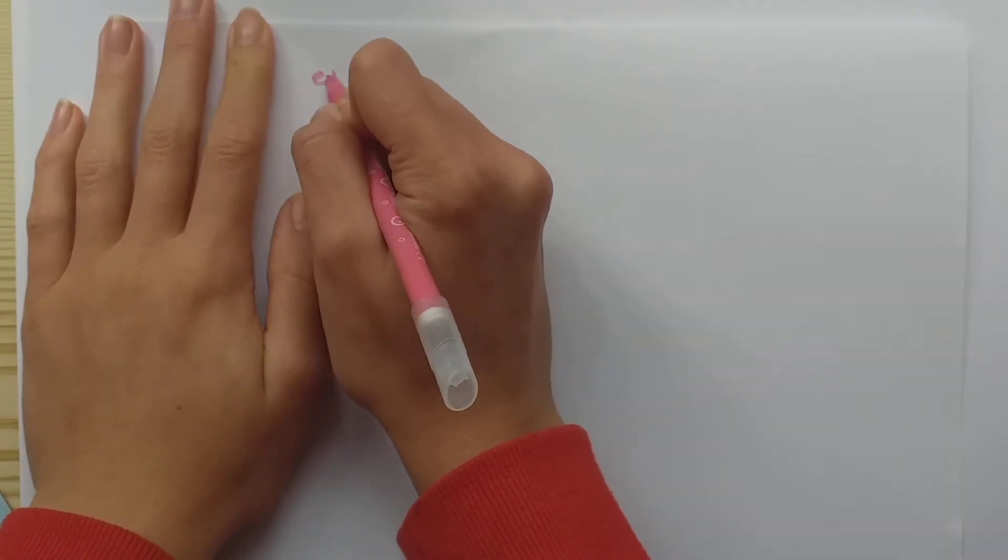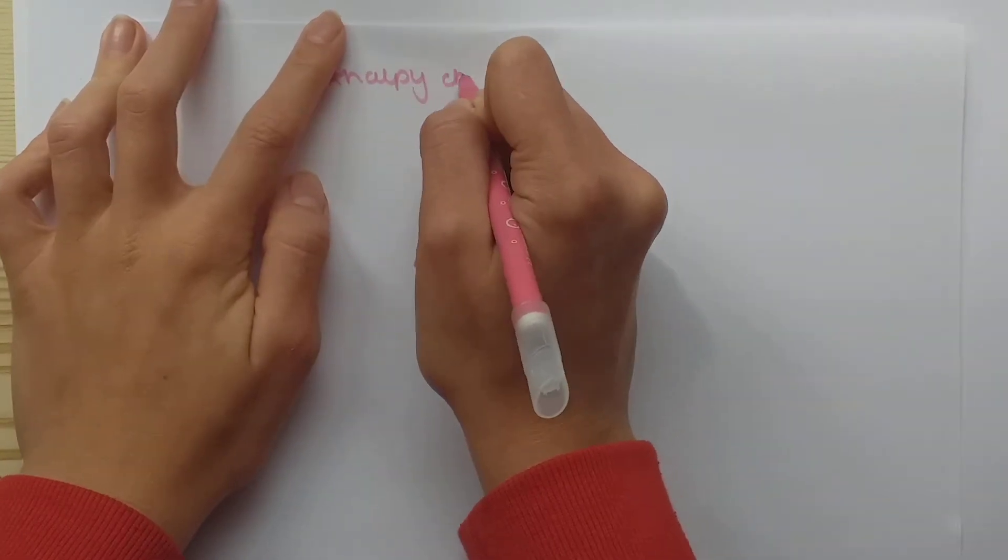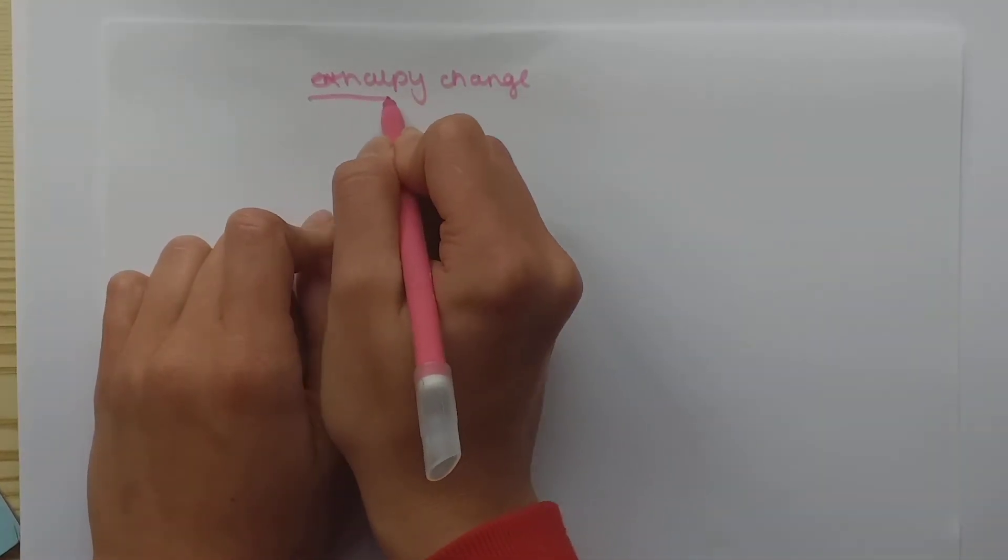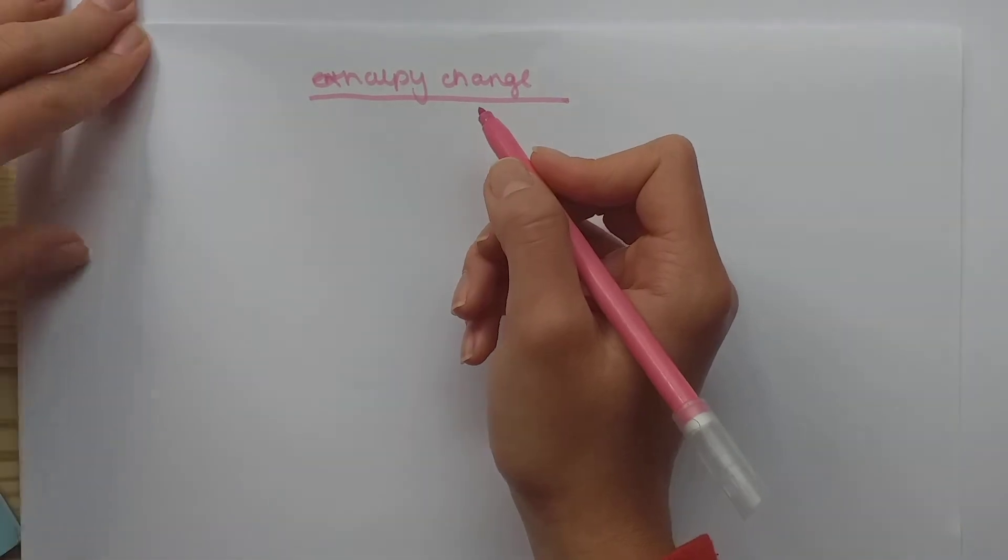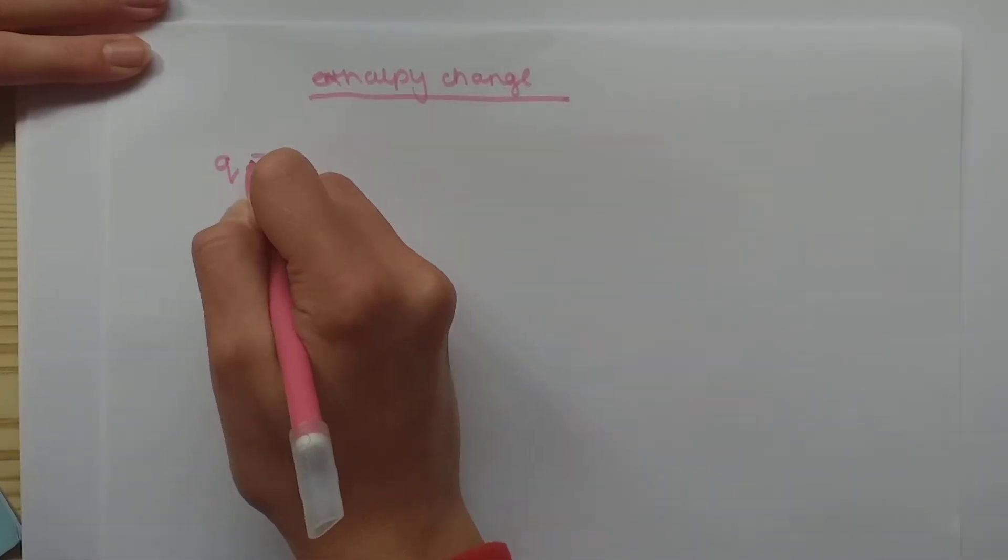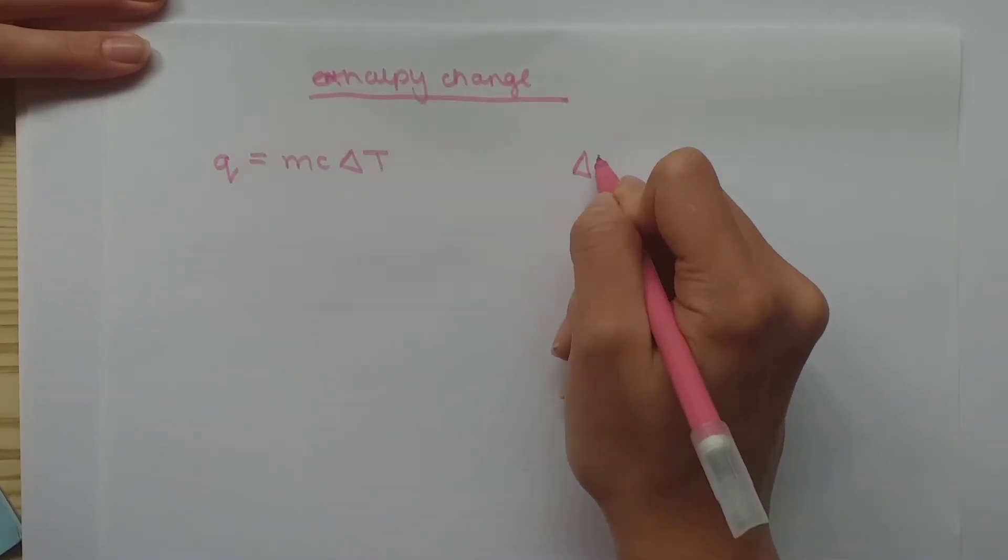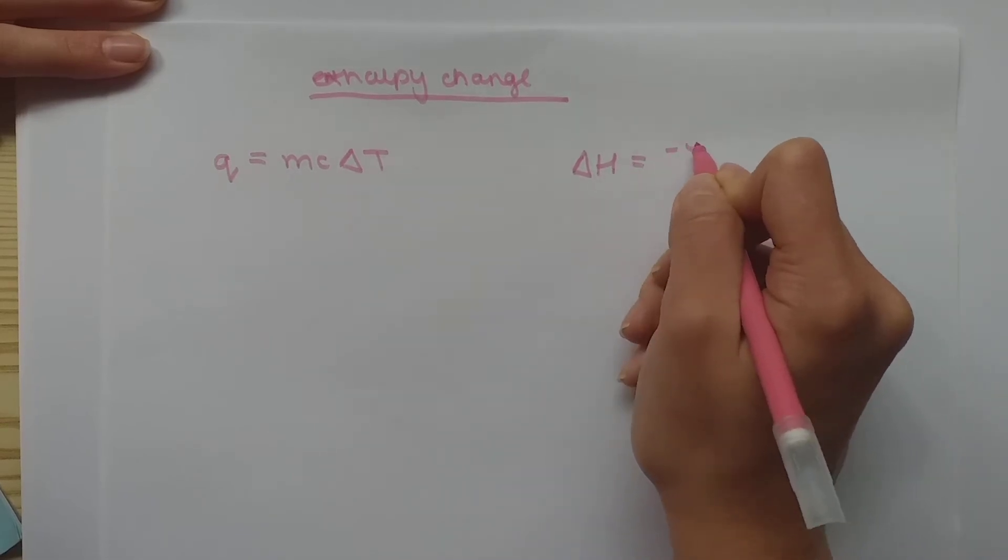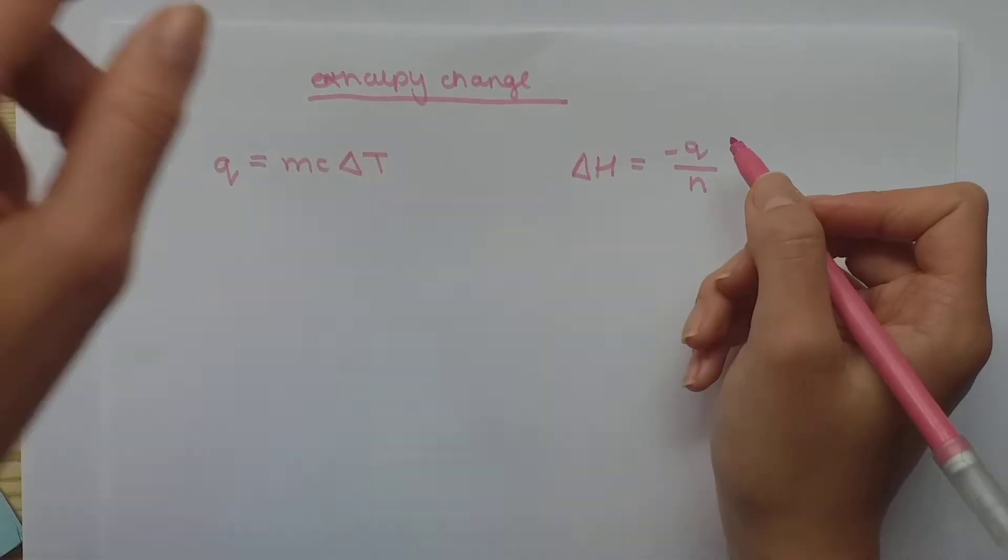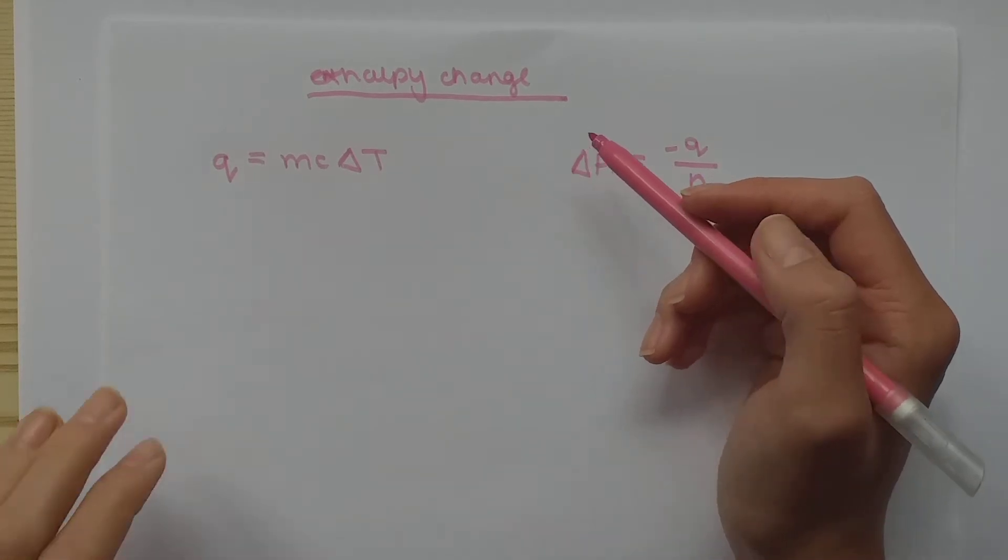And we're starting off with the enthalpy change. So, in Unit 2 AS Chemistry, you get these two equations. Q equals m, c, change in T. Actually, you don't get them. You have to remember them all by heart. And that's your enthalpy change. So, what we're aiming for is to calculate your enthalpy change indirectly.